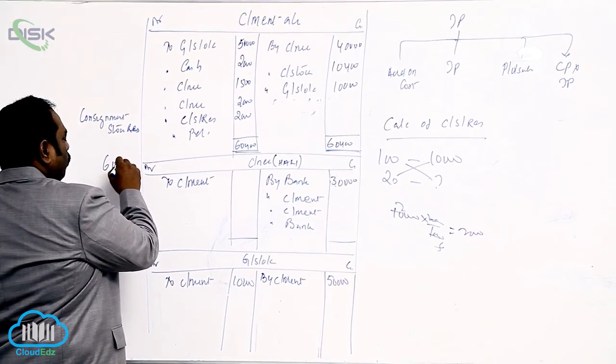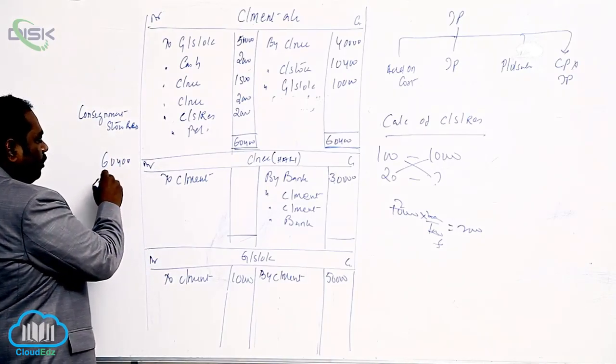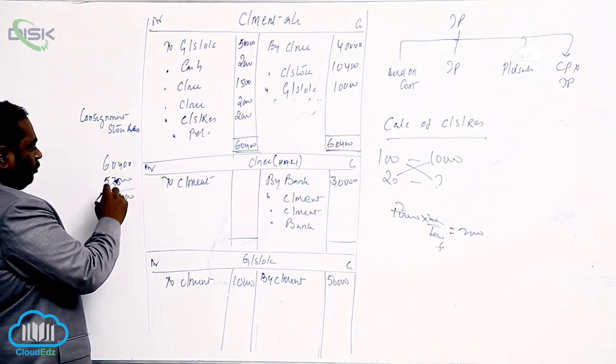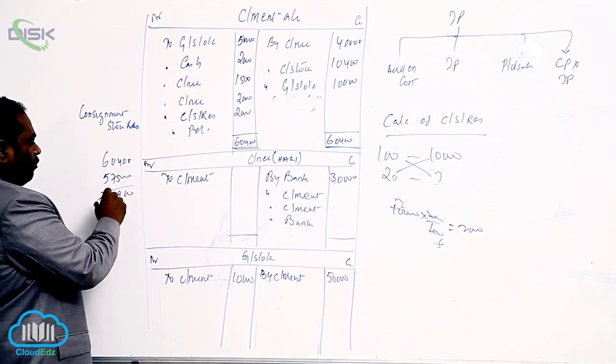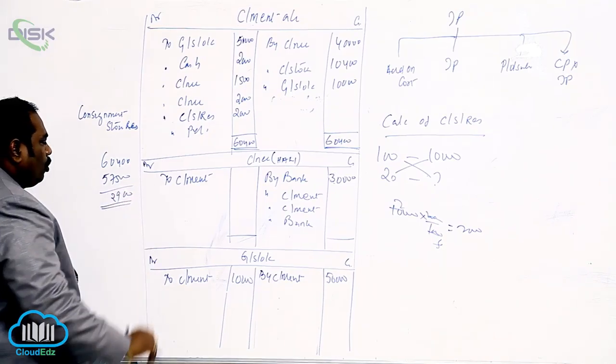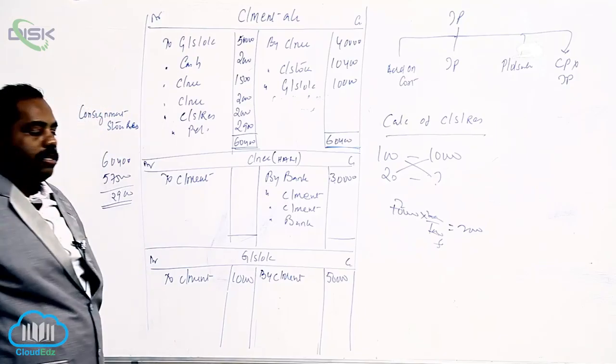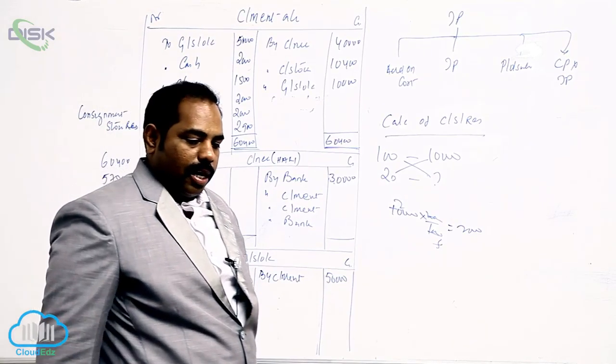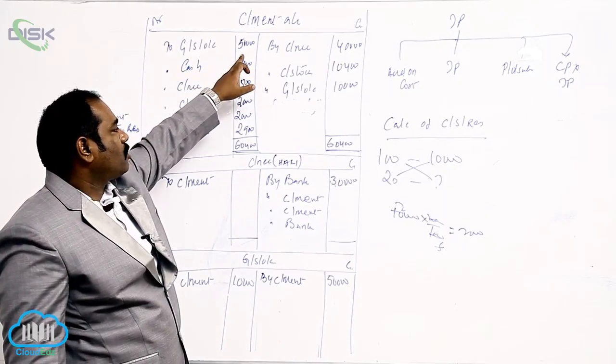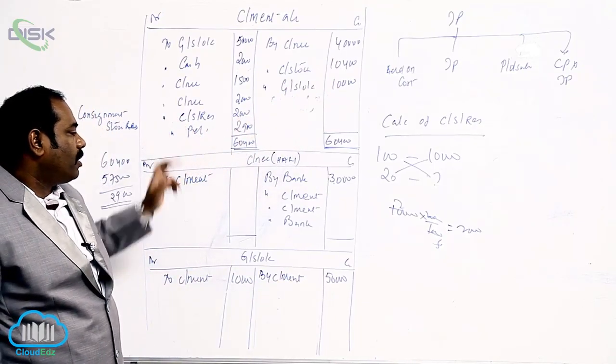60,400. Debit set total is 52, 53, 57,500. If you minus this, 2,900 is the profit which has been made by the consigner. So the answer is what? 2,900 is profit. So we have sent the goods at invoice price that has been unloaded. When you value unsold stock at invoice price that has been unloaded by writing on the debit set.